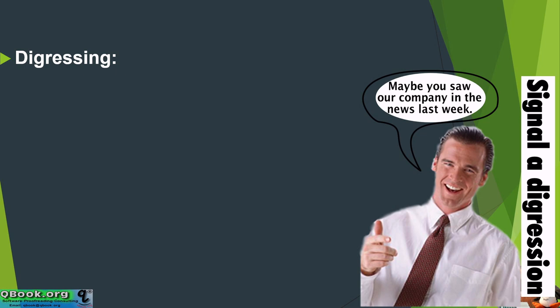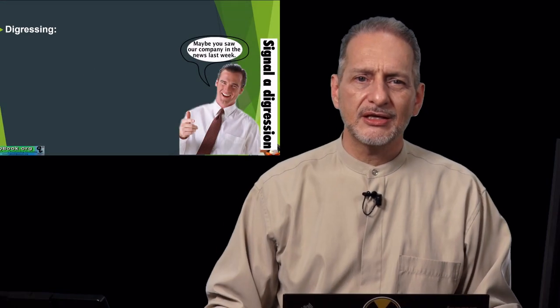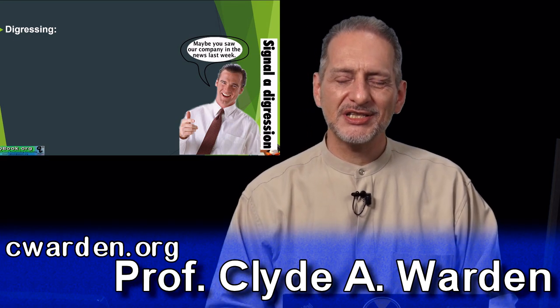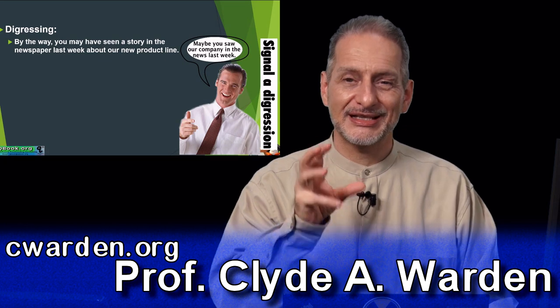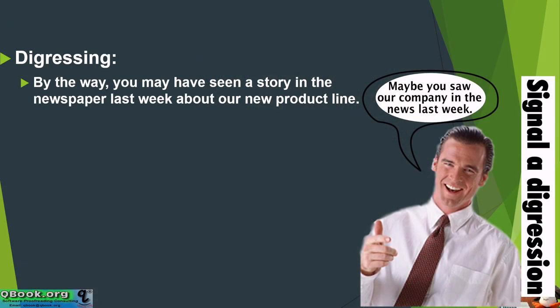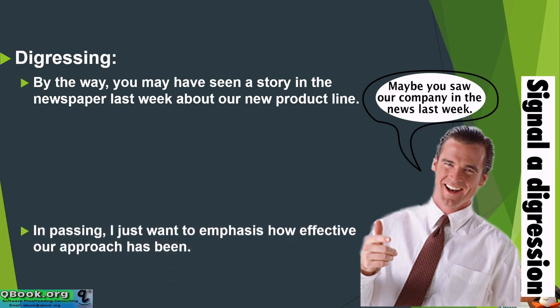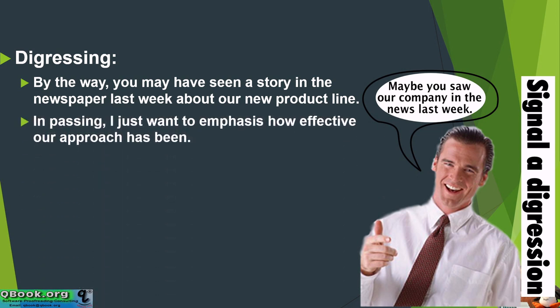What about digressing? When you're making your presentation, you may use something called digression. Digressing means you go off topic — you talk about something different, something that's not your exact topic. For example, you could say 'By the way, you may have seen a story in the newspaper last week about our new product line.' Or 'In passing, I just want to emphasize how effective our approach has been.' So we have 'by the way' and 'in passing.'